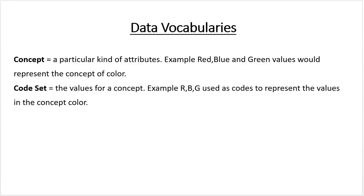Concepts are a particular kind of attribute — could be colors, could be units of measurement, could be days of the week, whatever. Code set values represent codes for the values inside that concept. So M, T, W, Th, F would be a code set for days of the week. Thank you for watching.